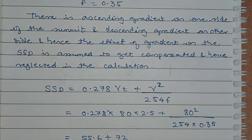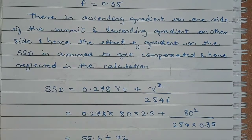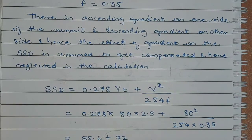As there is an ascending gradient on one side of the summit curve and descending gradient on the other side, the effect of the gradient on the stopping sight distance will be assumed to be compensated and hence we can neglect the calculations for the compensation.